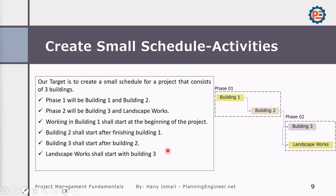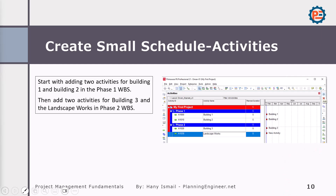Our target is to create a small schedule for a project consisting of three buildings. We have Phase One with Building One and Building Two, and in Phase Two we'll have Building Three and landscape works. To do this in Primavera, we simply add activities under each phase — Building One and Two under Phase One, and Building Three and landscape under Phase Two.